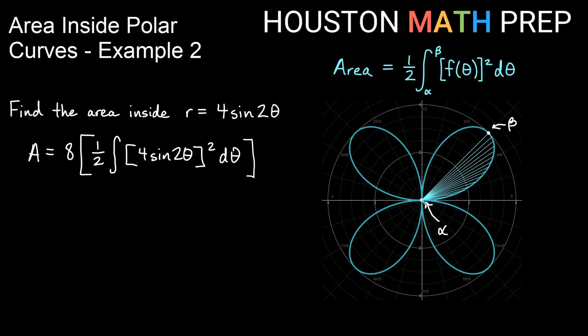So what is my alpha? Well, it's at the pole, and that's when r is zero. We can figure out when r is zero. Let's set r equal to zero. That would be 4 sine 2 theta equals zero. Dividing both sides by four gives sine 2 theta equals zero.